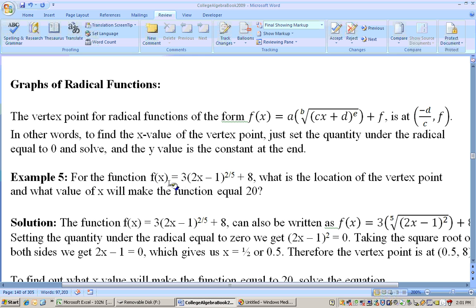Okay, so let's do this one. It says, for the function f of x equals three times the quantity 2x minus one to the two fifths plus eight. What is the location of the vertex point, and what x will make the function equal to 20? Well, here's the function again. Now, we can write it with radicals as the fifth root, that's another way of writing it. We just need to set this stuff underneath the radical, this 2x minus one, we just need to set that equal to zero and solve it.